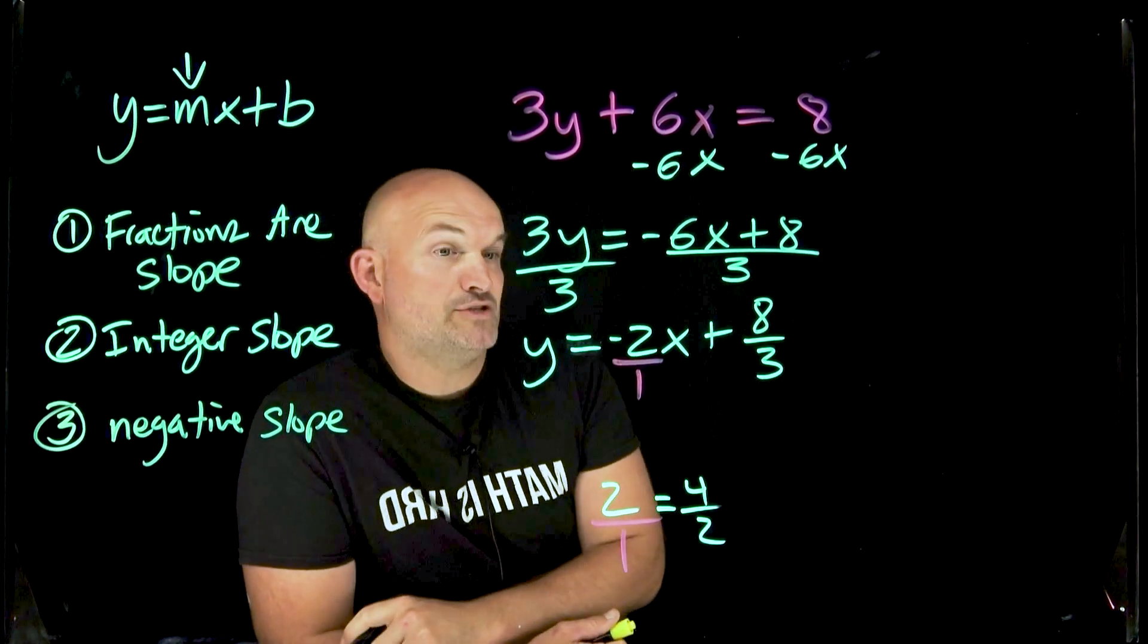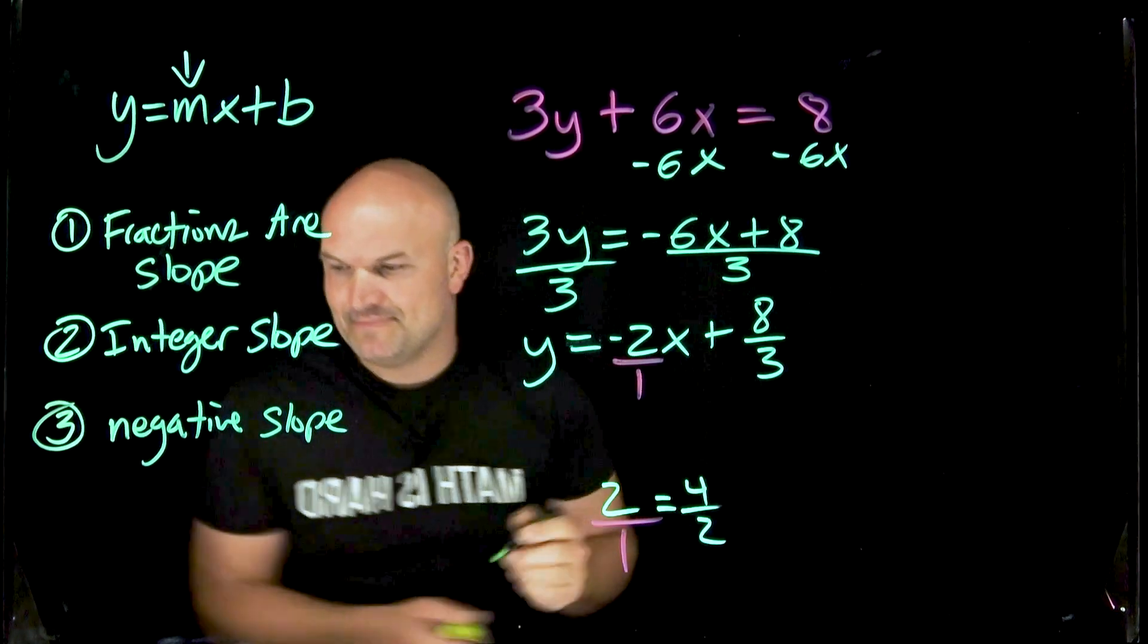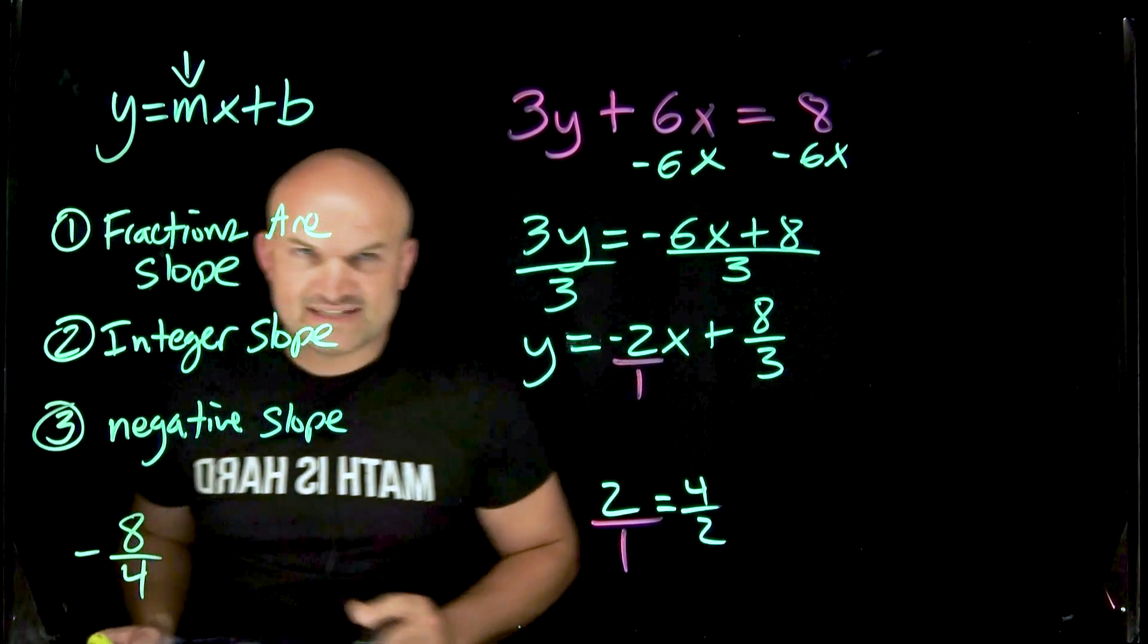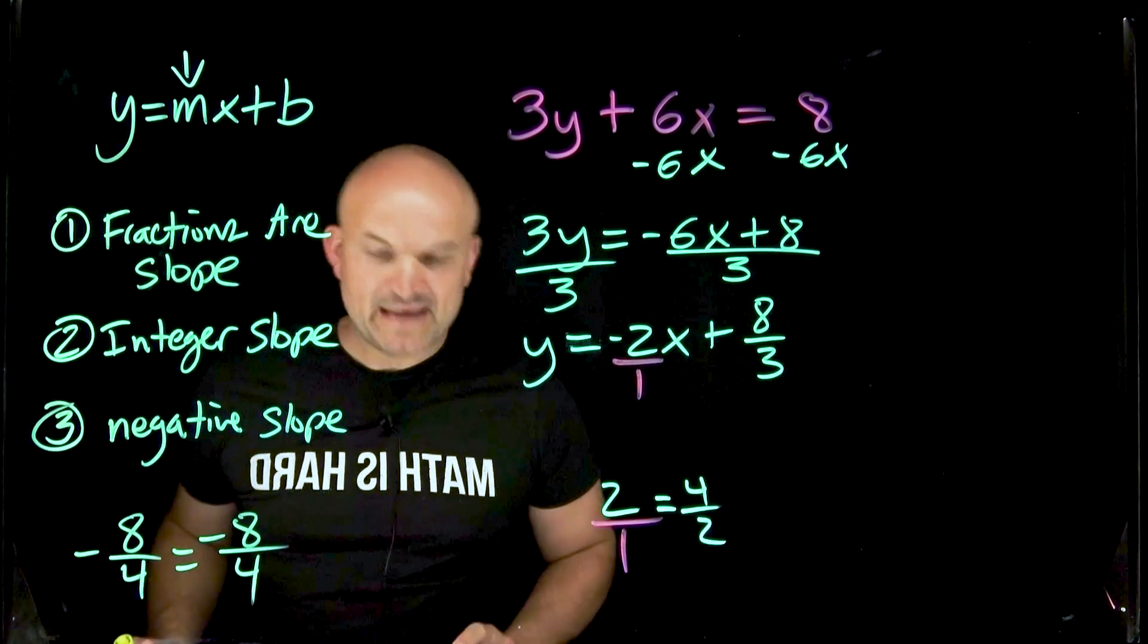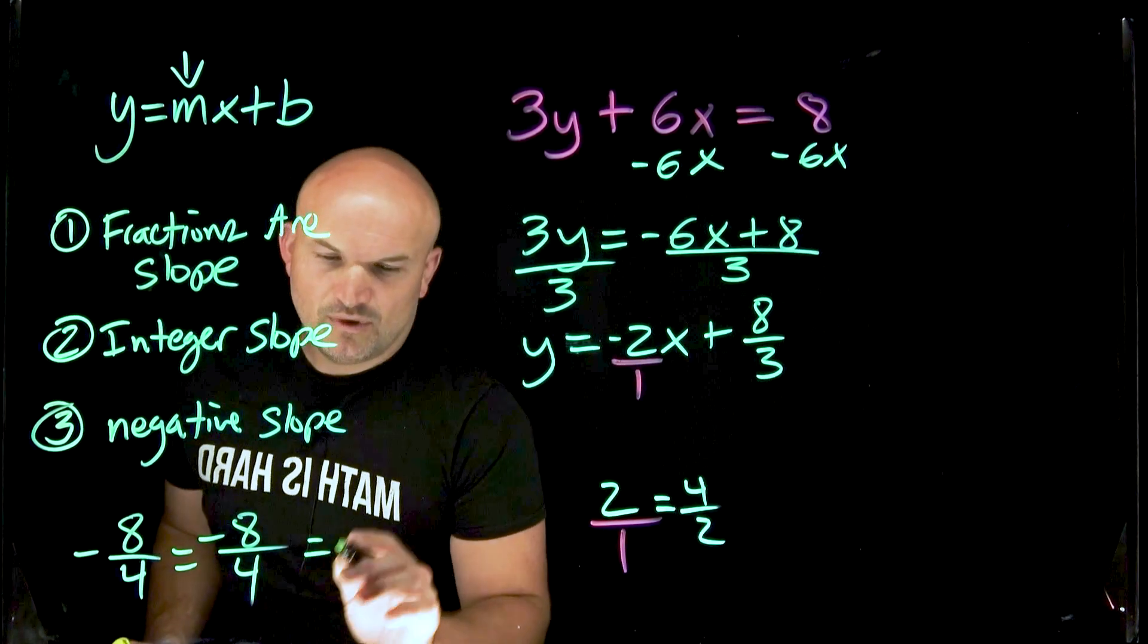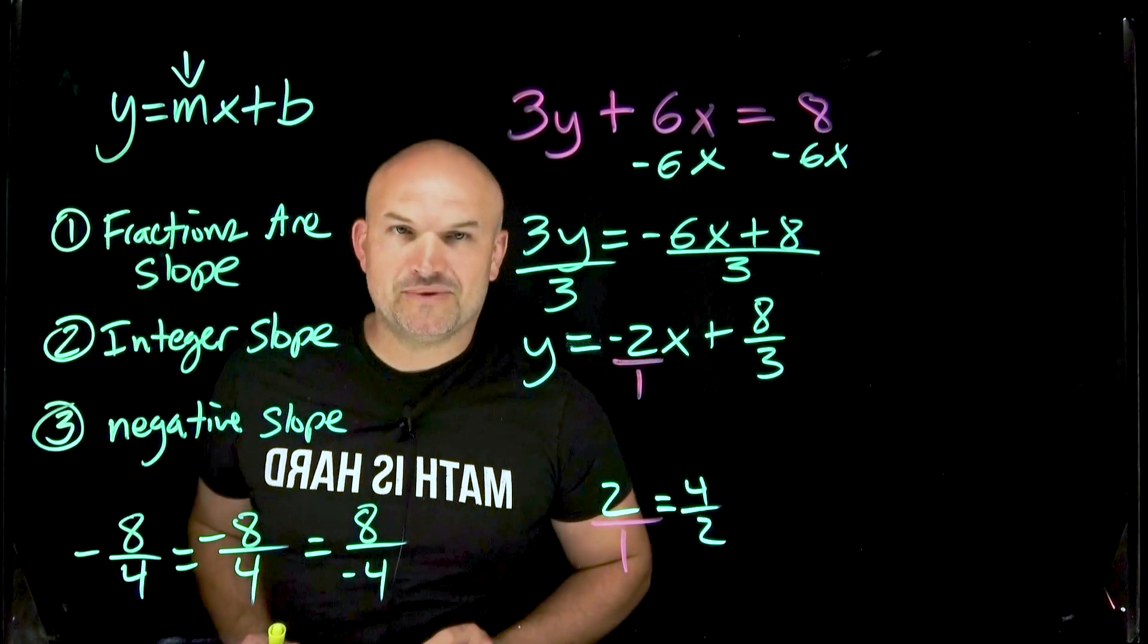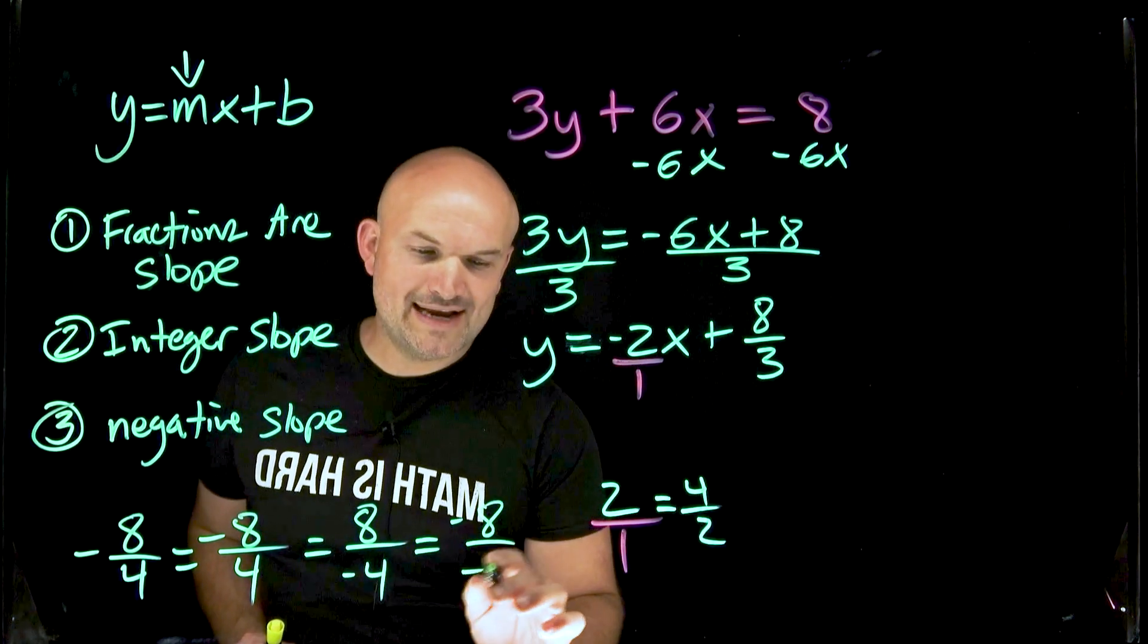Now the big thing with negative slope is students just don't know where do I put the negatives. So let's kind of play a little game. If I had a negative 8 divided by 4, what is that answer going to be? Negative 2. Well what about if I took a negative 8 over a 4? That is also going to be a negative 2. What about if I took a positive 8 over a negative 4? That answer is also negative 2.